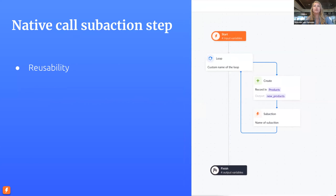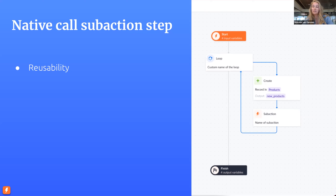The next item is a native call sub-action step. This allows you to reuse actions — if there's a part of your action you want to use in multiple places, you can make it a sub-action and reuse it across multiple actions. This will also be available as a no-coder step. These are a few new steps planned for Q2. This is not all we're going to add — we want to add way more features to make it easier and easier to use. Please let us know if you have any ideas about what we should add to the new actions, as we really appreciate your feedback.